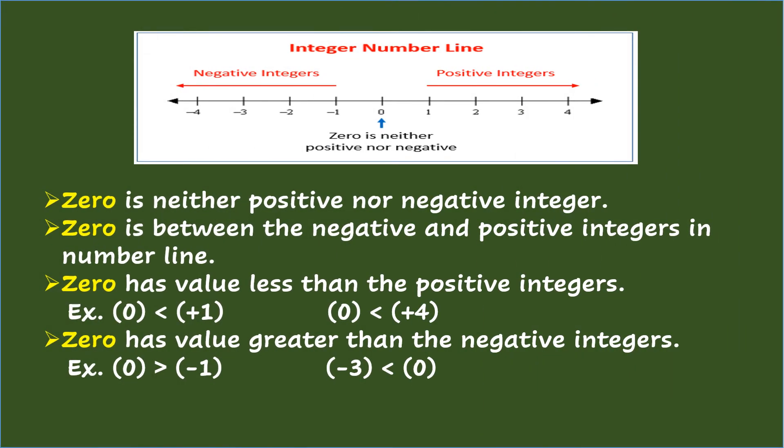On 0: 0 is neither positive nor negative integer. 0 is between the negative and positive integers in number line. 0 has value less than the positive integers. Example: 0 < (+1). 0 < (+4).